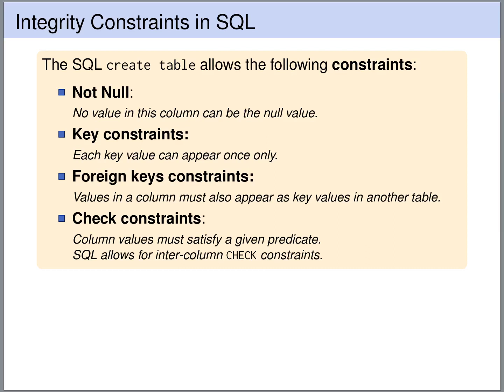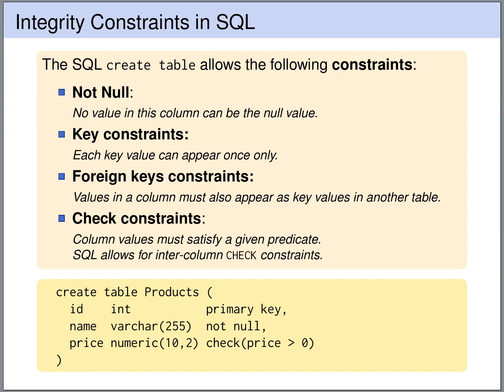An instance of such a CREATE TABLE statement is the following. Here, for example, we express that the ID of the product table should be a primary key, so the ID uniquely identifies the product. We specify that every product has a name and this name must not be null. We express that the price must be a decimal number of 10 digits total, with 2 after the decimal point, and we have a check constraint ensuring the price is greater than 0.